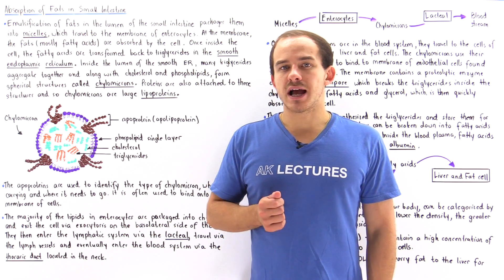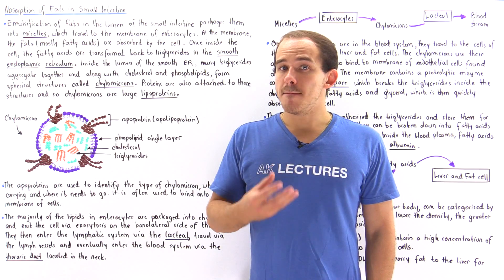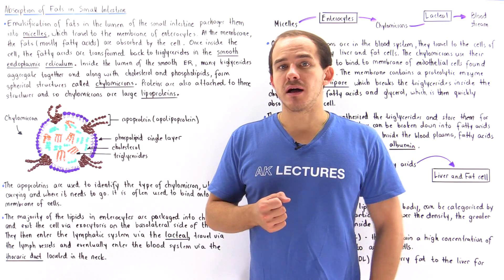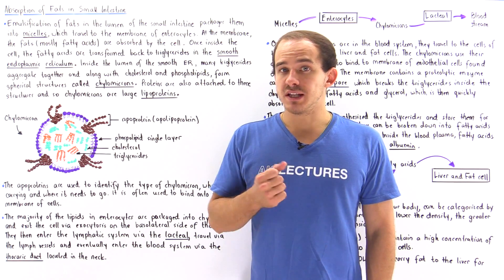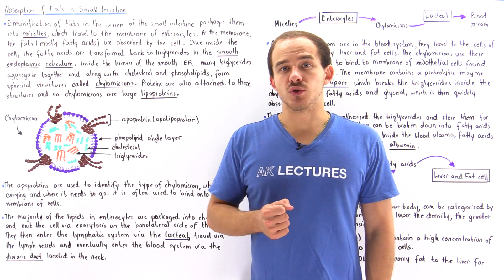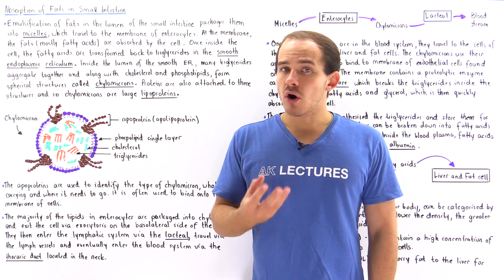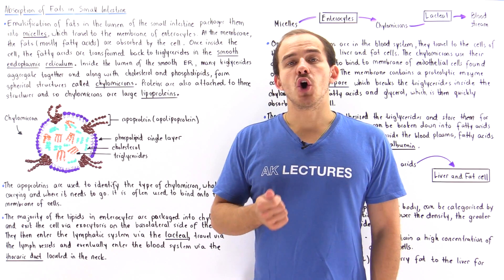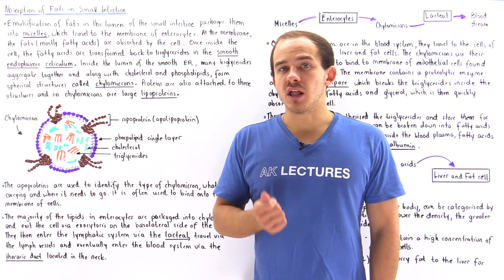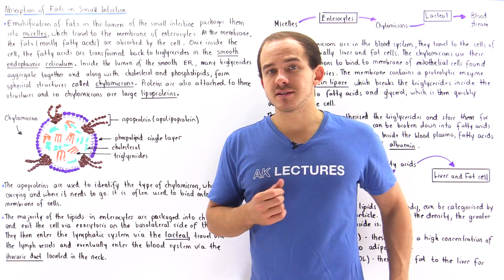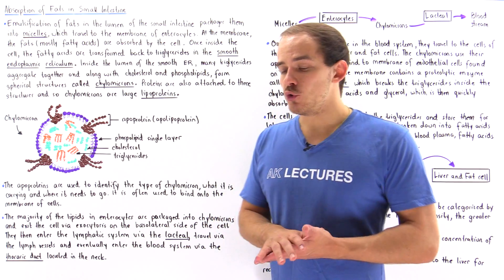Many fat molecules and lipid molecules combine to form particles known as fat globules inside our lumen.